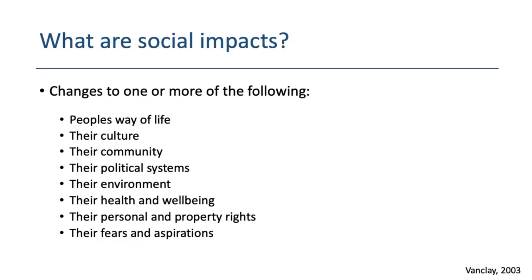Social impacts also include changes to political systems — the extent to which people can participate in decisions affecting their lives, the level of democracy available, and resources for that purpose. Changes to the environment people use — air quality, drinking water, food availability and quality, and levels of hazard like dust, noise, sanitation, and physical safety. And changes to health and well-being, defined as a state of physical, mental, and social well-being, not just the absence of disease.